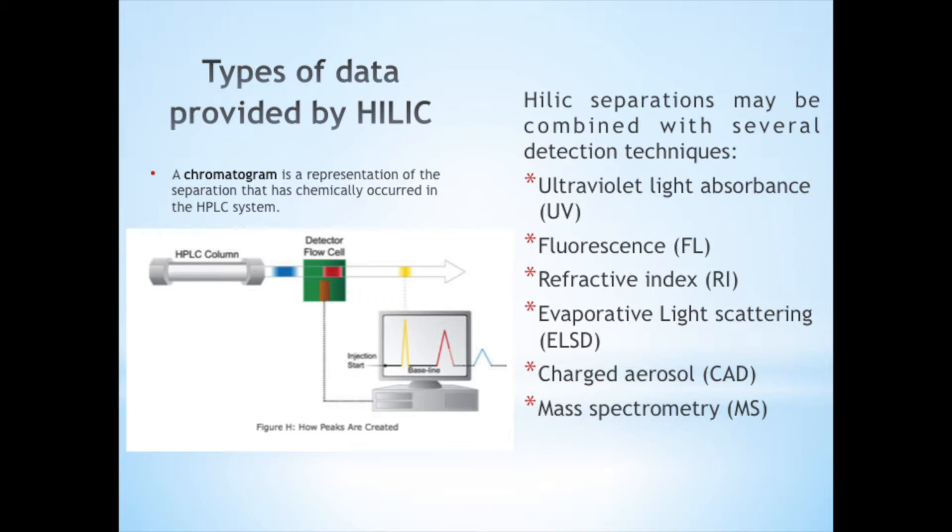For example, if a compound can absorb ultraviolet light, a UV absorbance detector is used. If the compound fluoresces, a fluorescence detector is used. If the compound does not have either of these characteristics, a more universal type of detector is used, such as an evaporative light scattering detector. For example, a UV or ELSD detector may be used in combination with a mass spectrometer to analyze the results of a chromatographic separation. This provides, from a single injection, more comprehensive information about the analyte.